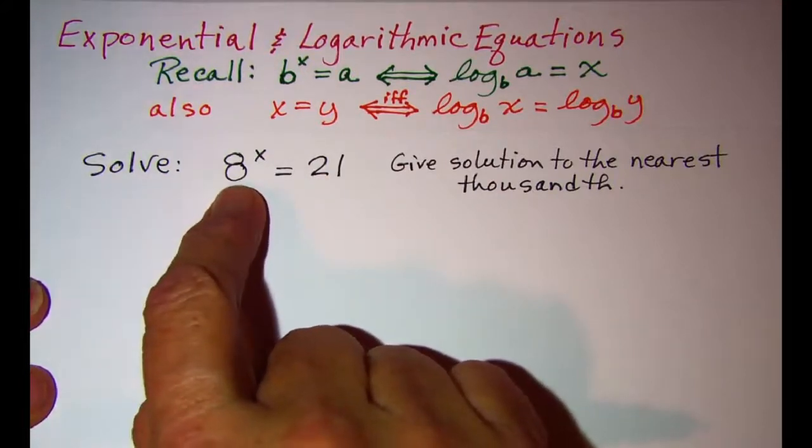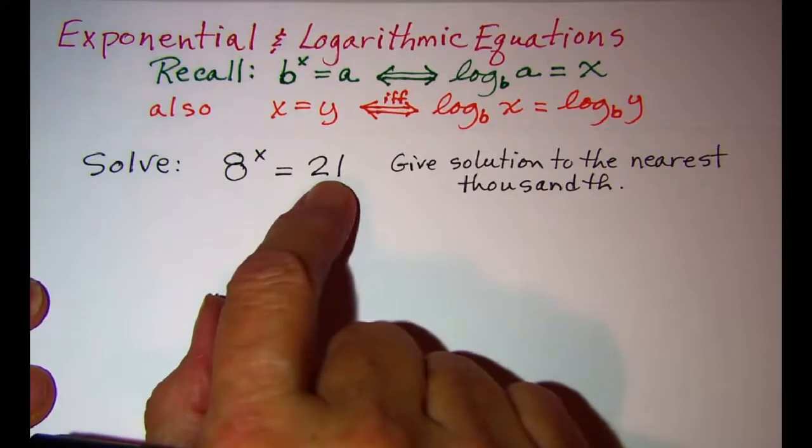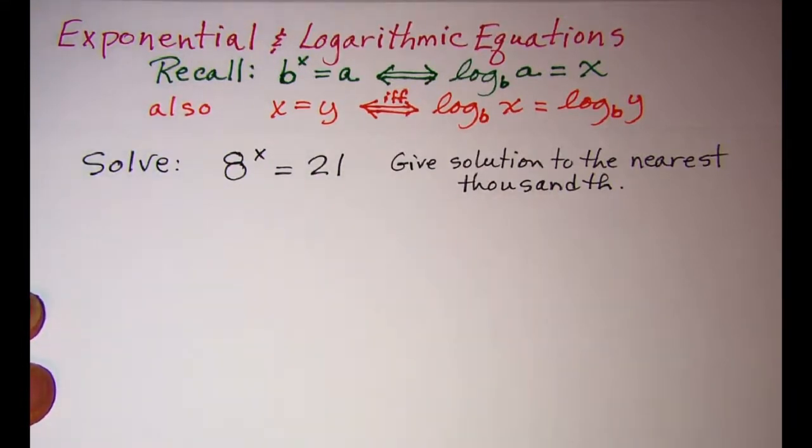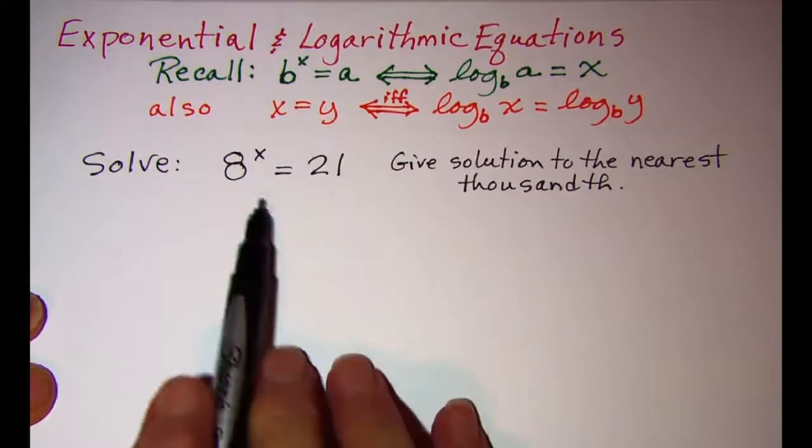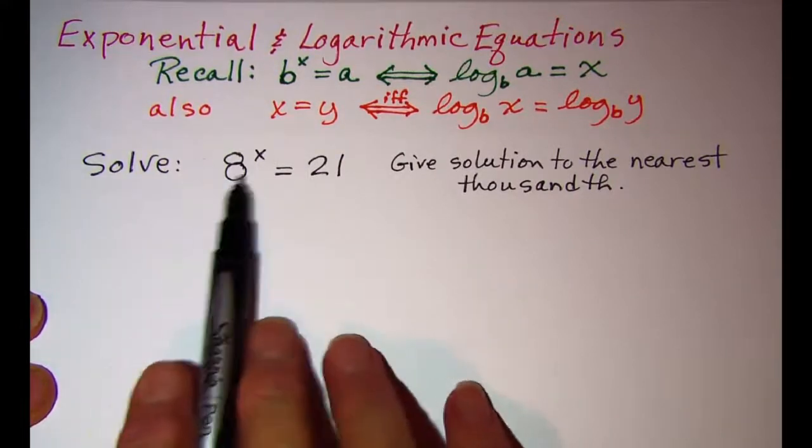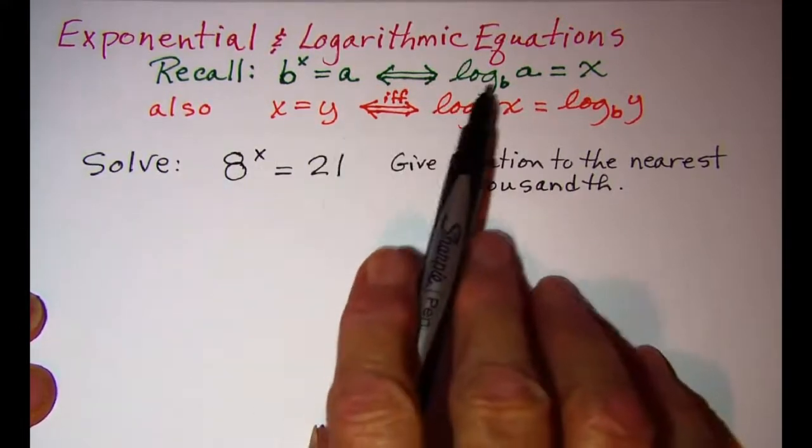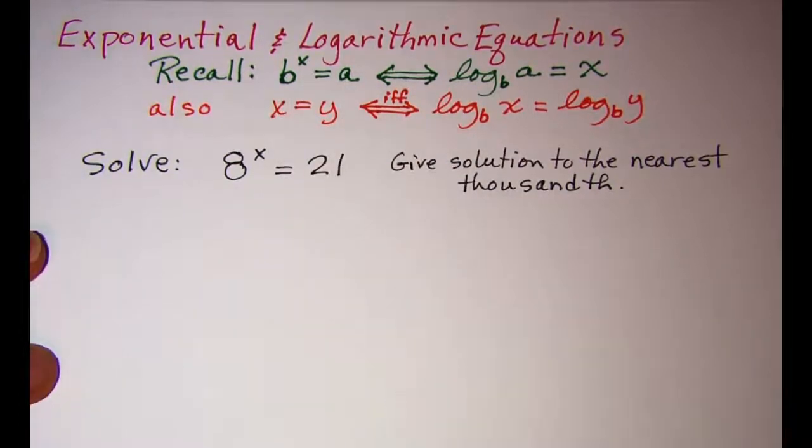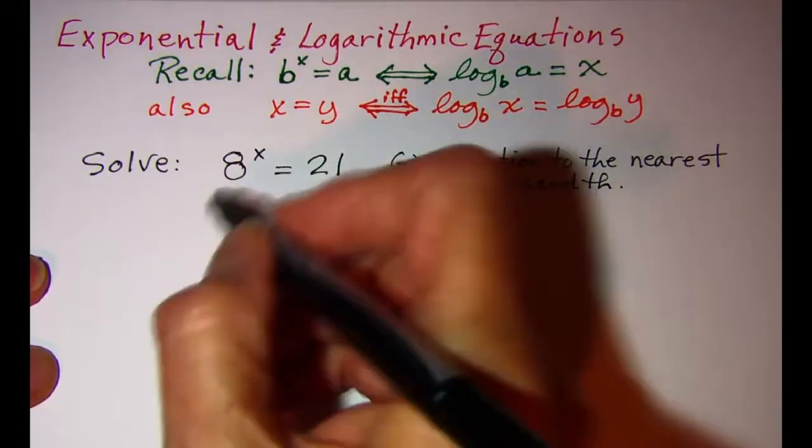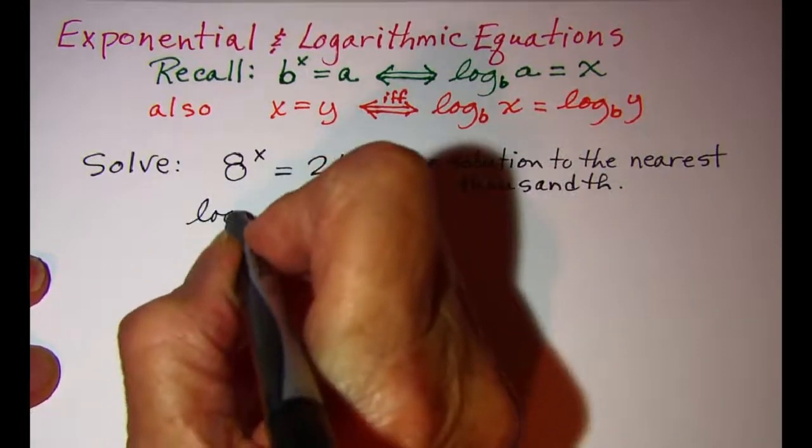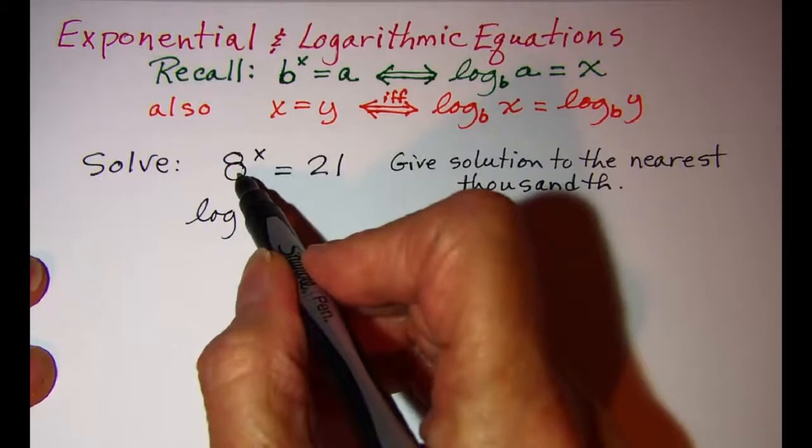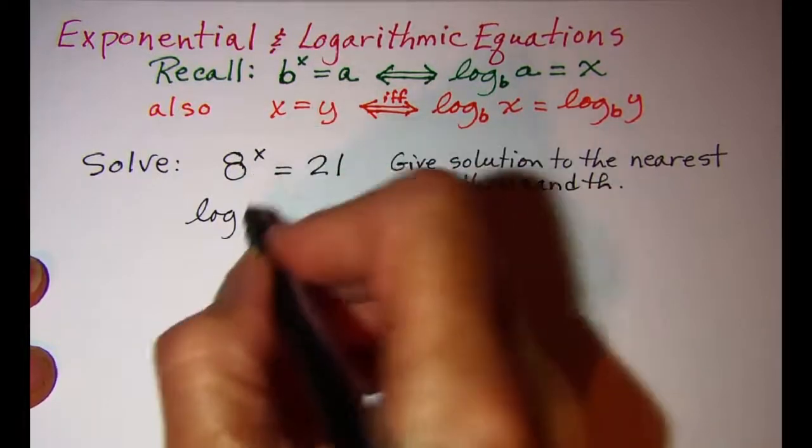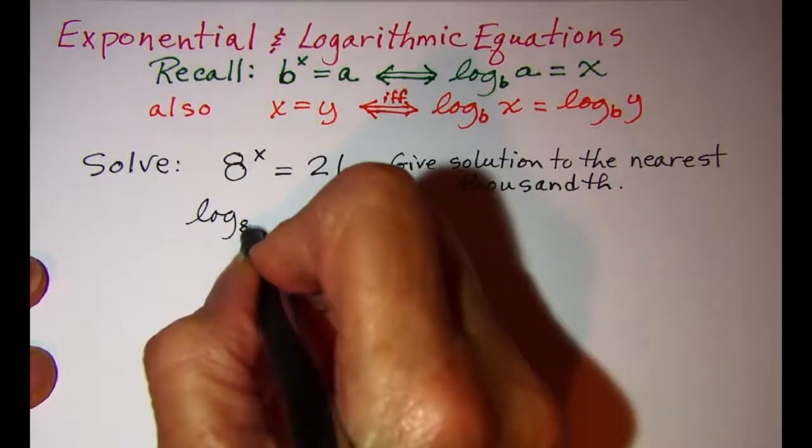This is 2 to the third power and 21 is not a power of anything. So what we want to do is take this exponential and rewrite it as a logarithm using this rule up here. So the log, our base of our exponential is 8, so the base of our logarithm is 8.